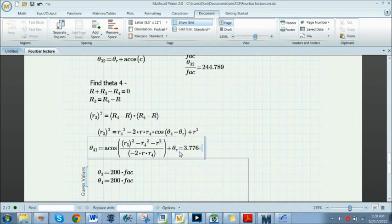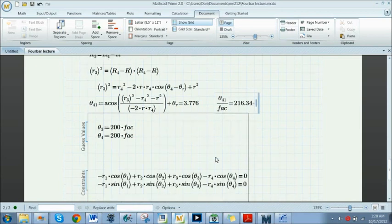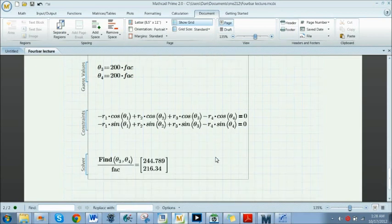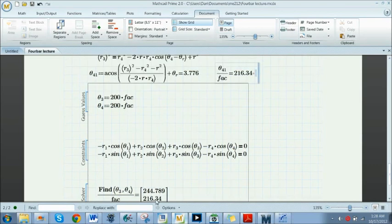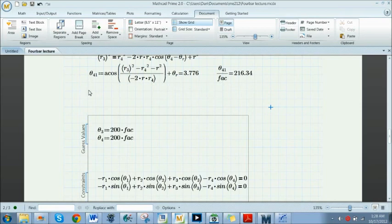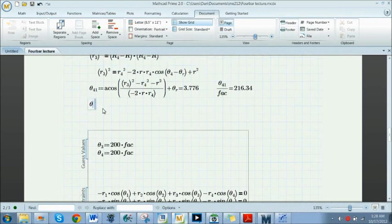We're going to define that as theta 4-1. It's a good thing I left this in radians, because if I didn't that would be a problem right now. But then we're going to get our answer of 3.76. Now let's check that answer by simply finding out what it is in degrees: it's 216 degrees. If I look down here, I use a little solve block just to double check my answers, and I also measured them in CREO, so that one I know is correct.